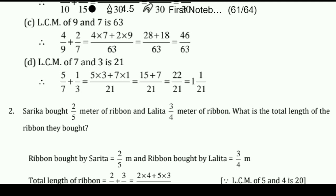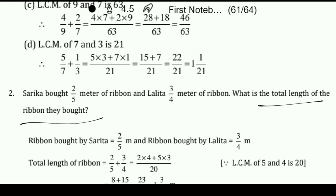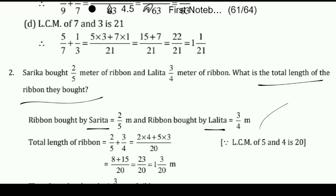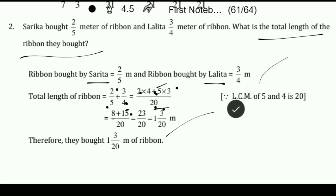Sarika bought 2 by 5 metre of ribbon and Lalita bought 3 by 4 metre of ribbon. What is the total length of ribbon they bought? Total means plus. So 2 by 5 plus 3 by 4. LCM of 5 and 4 is 20. In the 5 times table, 20 comes 4 times, so multiply by 4: 4 × 2 = 8. In the 4 times table, 20 comes 5 times, so multiply by 5: 5 × 3 = 15. So 8 plus 15 is 23 upon 20, which equals 1 and 3 by 20.